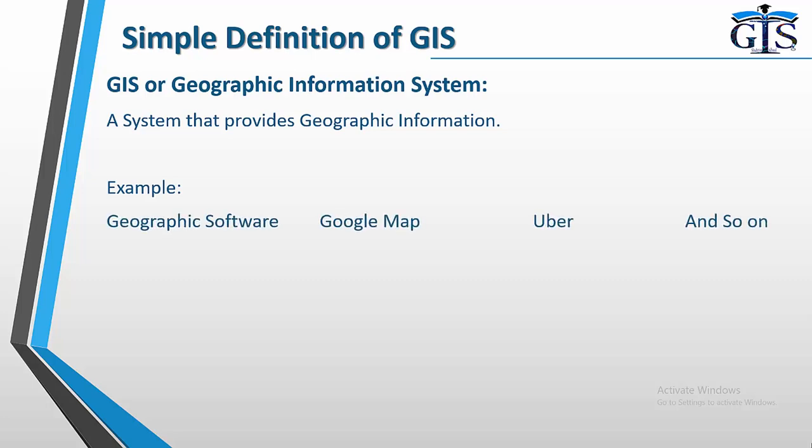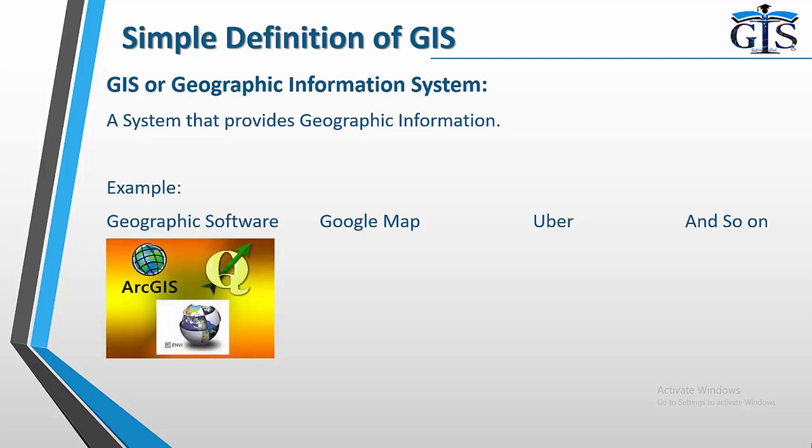GIS is everywhere. Let's see the examples. Any kind of geographic software which is being used for map creation, database management and analysis — all of those software are examples of GIS. For example, ArcGIS, QGIS, SuperMap and many more.